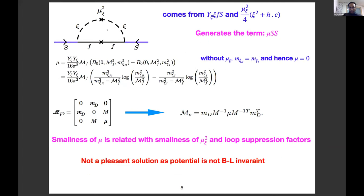This loop, generated from two relevant terms, produces the mu_S*S term. The loop function shows that if M_{Zeta_R} equals M_{Zeta_I} — without the soft term mu_Zeta — this loop vanishes. Once mu is generated, we obtain the neutrino mass, and the smallness of mu is related to the smallness of the soft breaking term mu_Zeta squared and the loop suppression factor 16*pi^2. However, explicitly breaking B-L in the potential is not a pleasant solution.